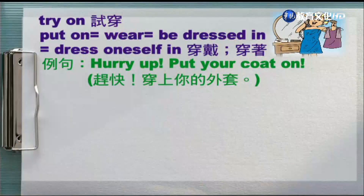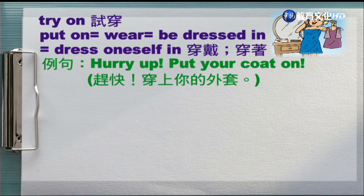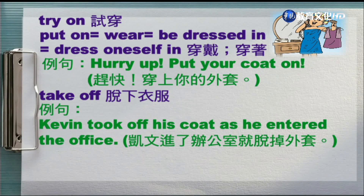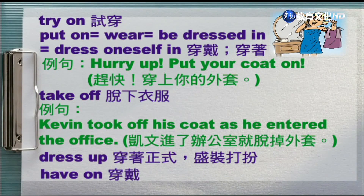好，接下来我们看一下片语的用法。Try on，在课文里面有提到的。我们请Jeff老师来帮我们念：Hurry up, put your coat on. 好，在这边就是快一点，把你的衣服穿上。那这边有put on，还有try on，这样子的用法。接下来我们看到脱掉衣服这个部分：Kevin took off his coat as he entered the office. 在这边就是说Kevin进入办公室之后就脱掉他的外套。另外还有两个片语，就是说你要盛装打扮的时候怎么说，还有穿戴的时候怎么说，我们可以看到dressed up，还有put on，这样子的用法。